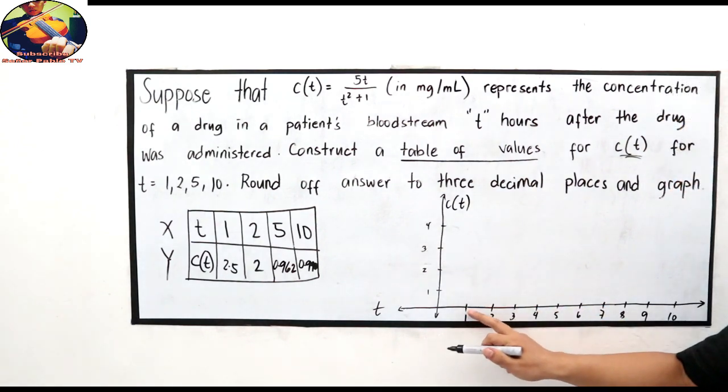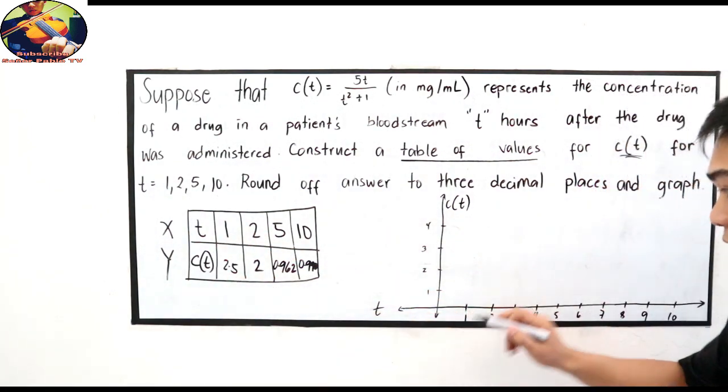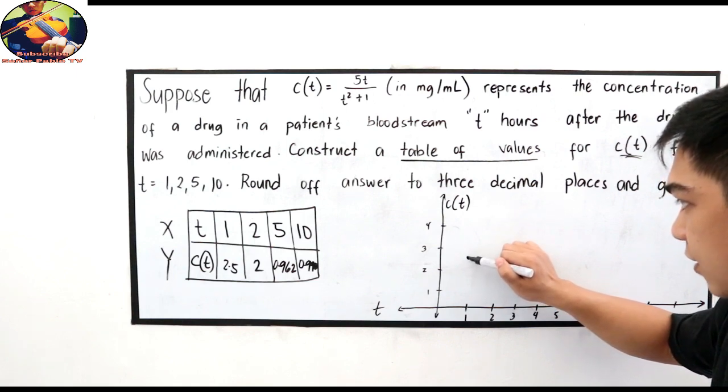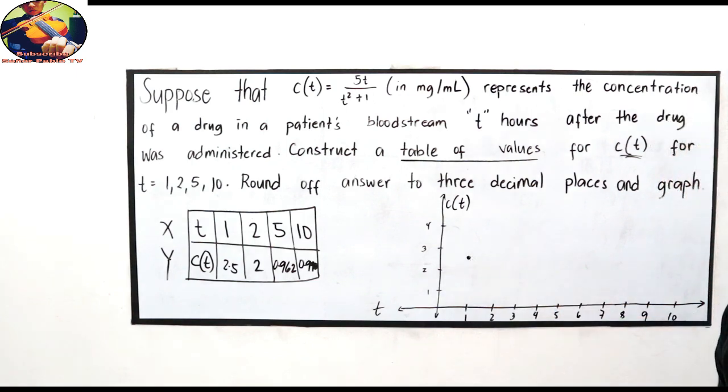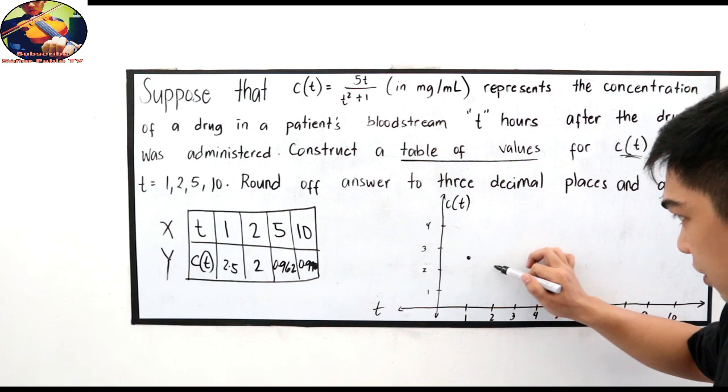So, when we have one hour on our x, 2.5, let's plot 2.5. Between two and three. There it is. Next, when we have two, it goes to two now. This is two.